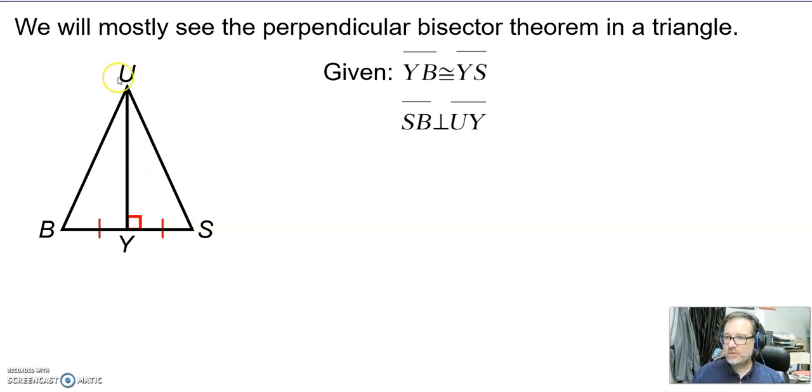So we're going to see something like this. I am showing you that BY is congruent to YS. There's a bisect and UY is perpendicular to BS. There's my right angle. So this segment is a perpendicular bisector to this side. So we are allowed to say that BU is congruent to SU.